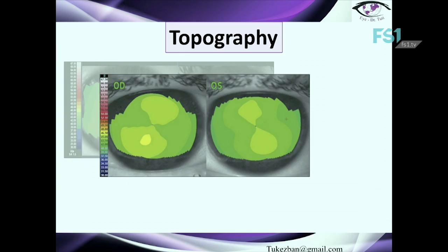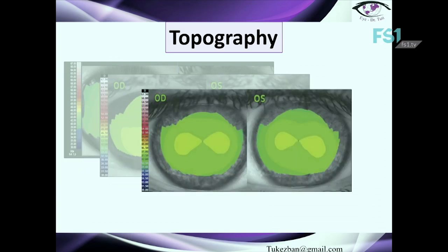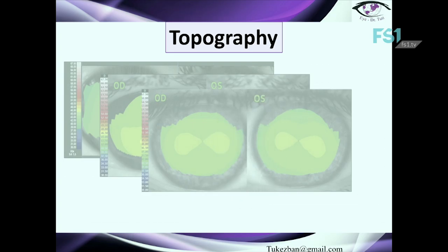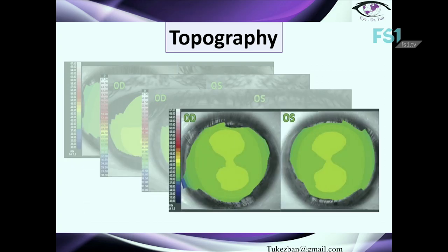We have to pay attention to the axis of this pattern. If we imagine a line on the central 90-degree axis, that gives us the 'with-the-rule' astigmatism pattern. In this case, the axis of the pattern lies on the 180-degree axis, making it 'against-the-rule' astigmatism. In another patient, the bow-tie pattern lies on the 90-degree axis, indicating 'with-the-rule' astigmatism. All these pictures show normal, non-operated corneas.